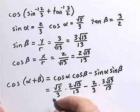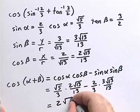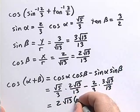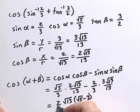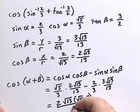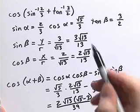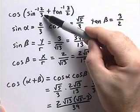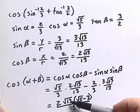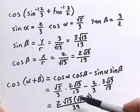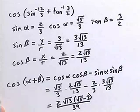Cleaning this up and simplifying, we get 2 times the square root of 13 times the square root of 5, minus 3, all divided by 39. So the cosine of sine inverse of 2 thirds plus tangent inverse of 3 halves is equal to 2 times the square root of 13 times the square root of 5, minus 3, all divided by 39.